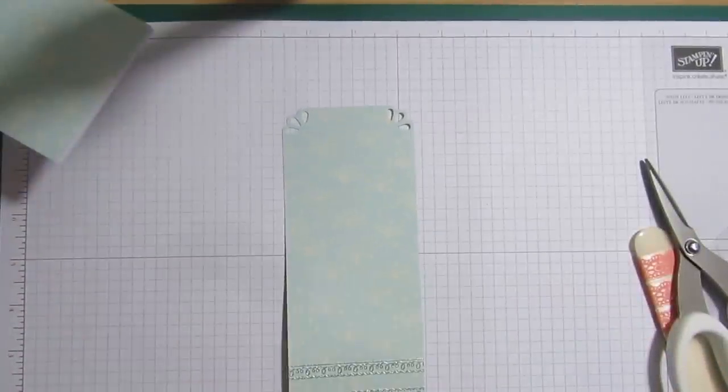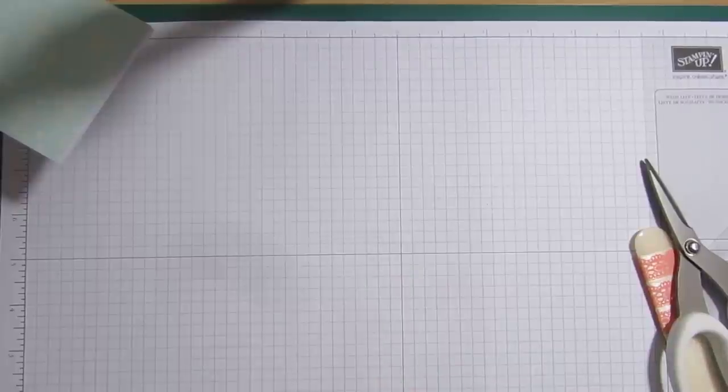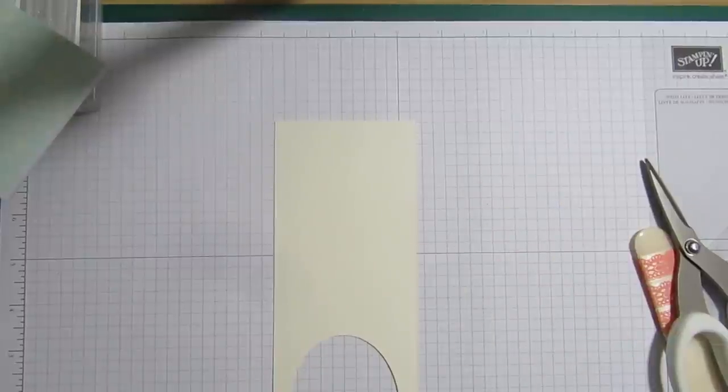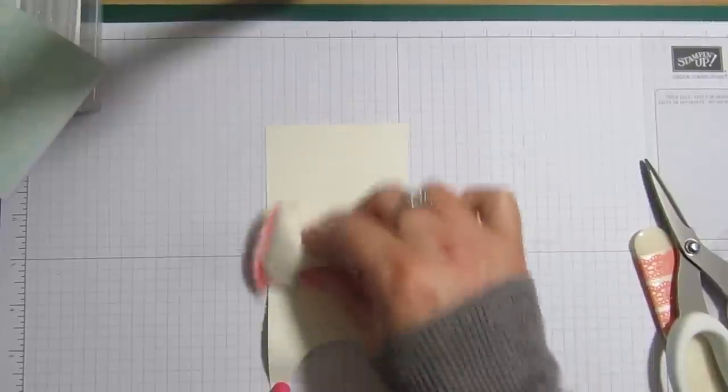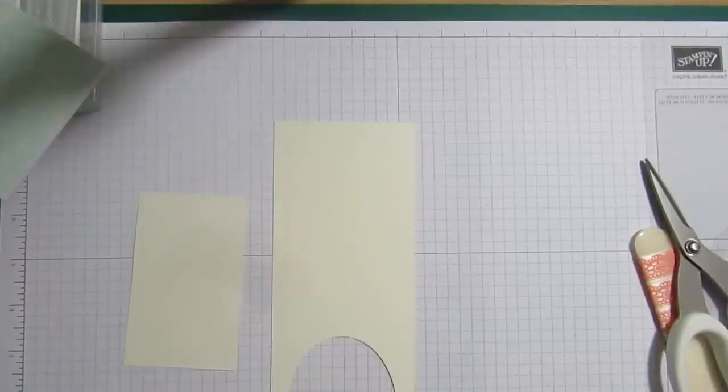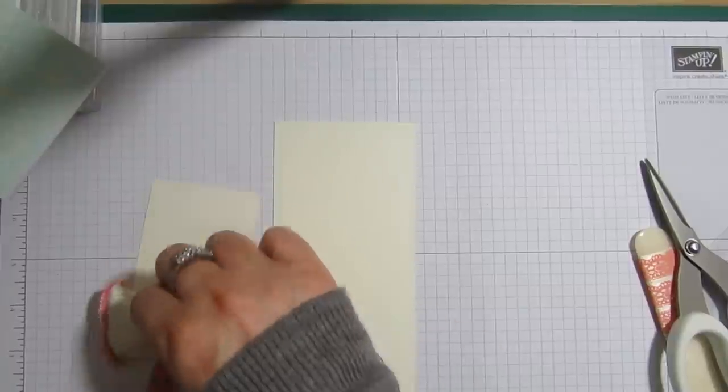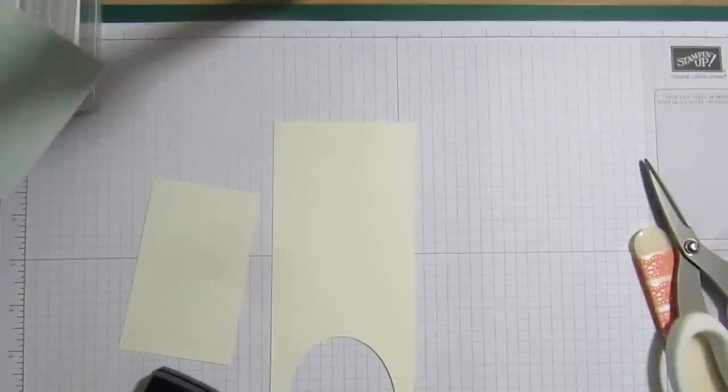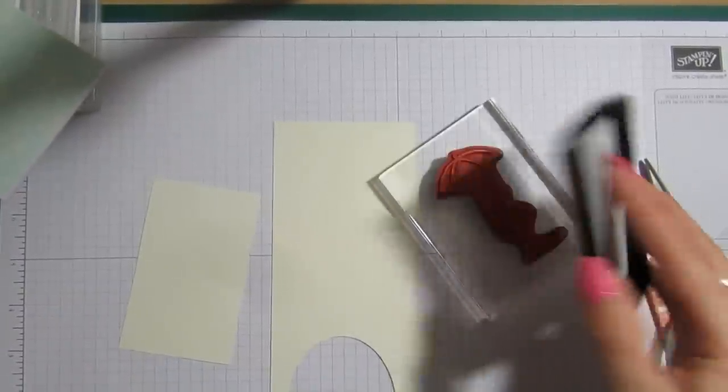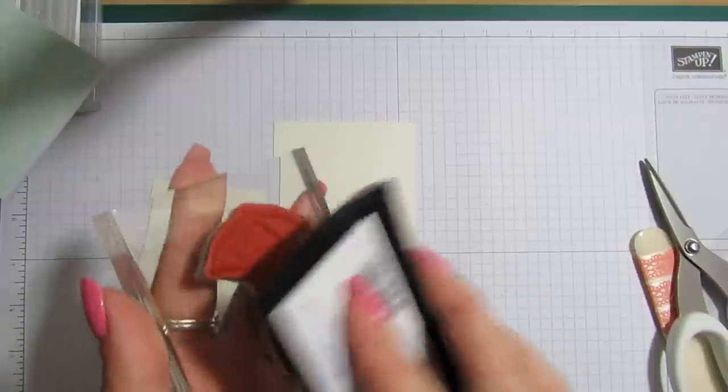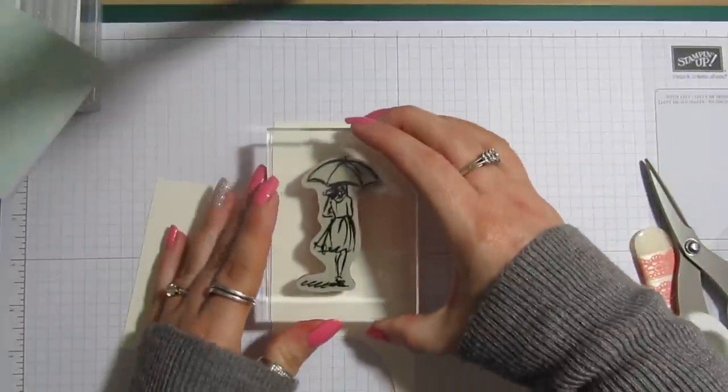So, what I want to do now is our little lady from the stamp set. We're just going to heat emboss her in silver as well. So, give that a good wipe over. And also, I've got a little scrap which we'll do our sentiment on. So, I've got the lady mounted here. So, we'll ink her up. And then, we'll stamp her out.